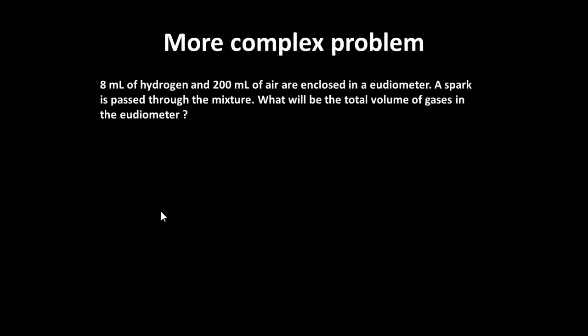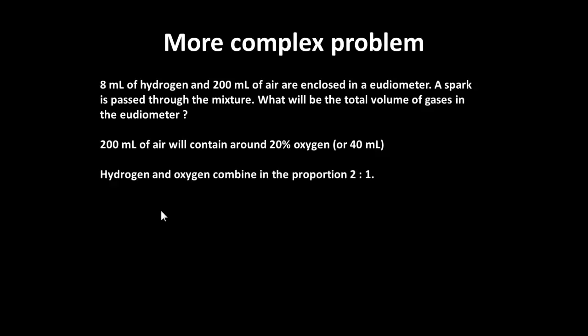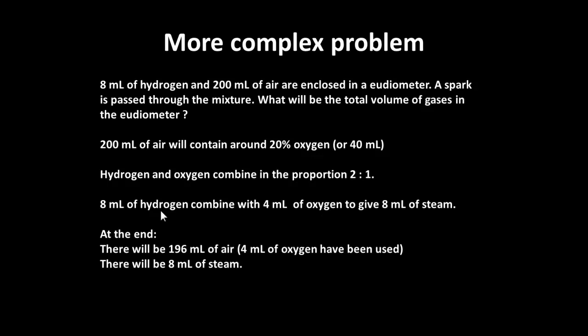A more complex problem: If you get eight milliliters of hydrogen, 200 milliliters of air, and you spark it, what is the total volume left? 200 milliliters of air has 20% oxygen, or 40 milliliters, and hydrogen and oxygen combine in the proportion of two to one. So eight milliliters of hydrogen will combine with four milliliters of oxygen, giving eight milliliters of steam. There's going to be 196 milliliters of air, because four milliliters of oxygen have been used, and eight milliliters of steam. So the total volume of the gases is 204 milliliters.